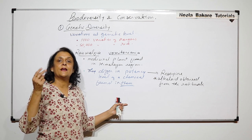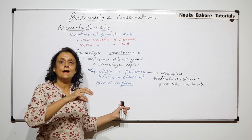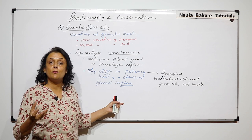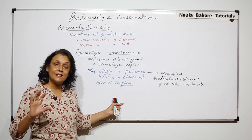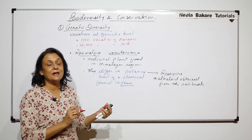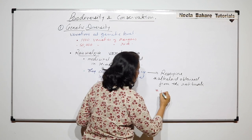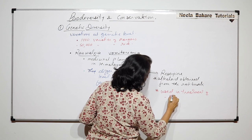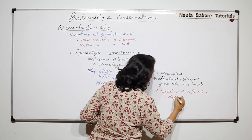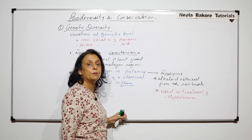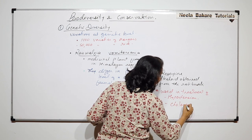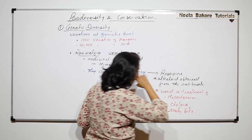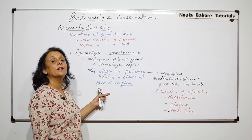So the name of the plant is the same, the chemical obtained is the same — the only difference is one variety produces the chemical with less power and another variety produces the same reserpine with a different, higher power. This is a medicinal plant and reserpine is used in the treatment of hypertension (high blood pressure), cholera, and even to treat snake bite.